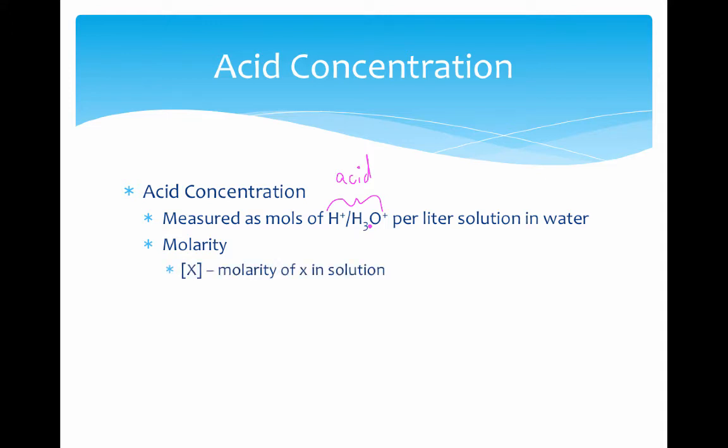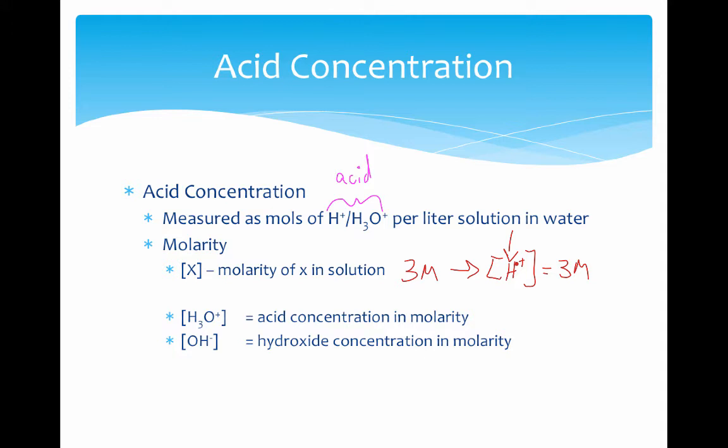Something new is representing molarity in the form of brackets. Just like we could say a solution is 3 molar, we can write bracket [H+] = 3M, and this is how we talk about concentration of an H+ solution. The symbols we'll use are [H3O+] for acid concentration in molarity and [OH-] for hydroxide concentration in molarity, measuring base concentration.